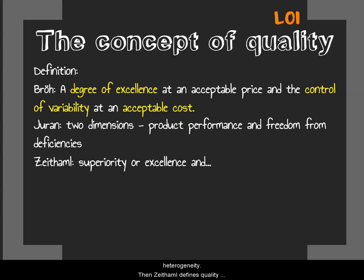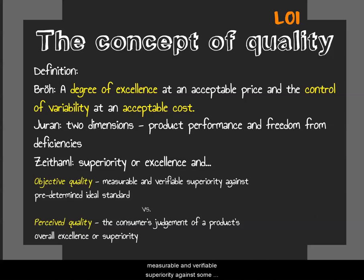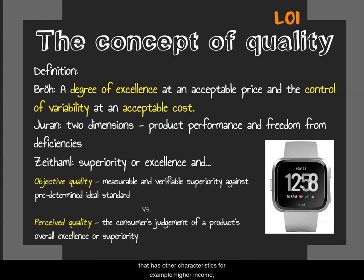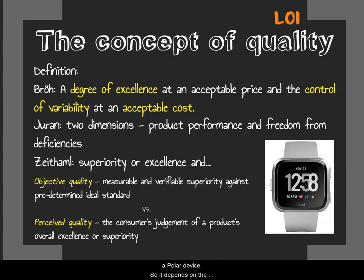Zeithaml defines quality as superiority or excellence, but distinguishes between objective quality and perceived quality. Objective quality refers to measurable and verifiable superiority against some predetermined ideal standard, whereas perceived quality is defined as the consumer's judgment of a product's overall excellence or superiority. For example, the Fitbit Versa was released at $3,500, and if you pay that amount of money, you expect superiority in terms of quality. Someone with higher income might go for the Fenix 5 or Fenix 6 and think the Fitbit is not as good quality as a Garmin or Polar device. It depends on the person's perceived quality versus objective quality.